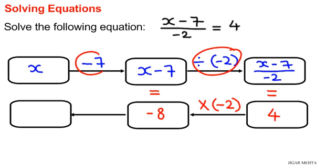Next, subtraction of 7. The opposite operation will be addition of 7. So I'm going to add negative 8 and 7. I get negative 1, so x equals negative 1 for this case. Thank you.